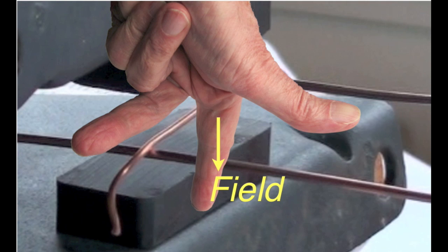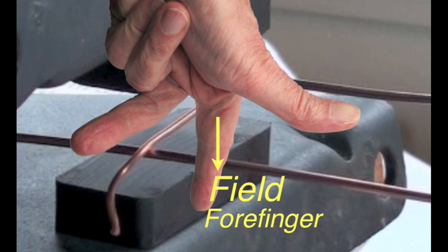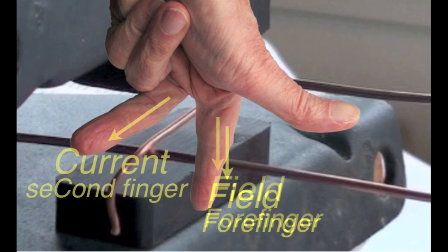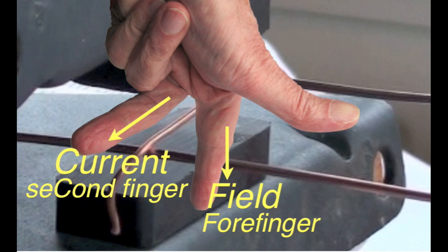If you position your hand so that the forefinger represents the magnetic field. I'm sure you'll remember that the F in forefinger represents the F in field. And then the second finger is angled so that it represents the flow of current. Less easy to remember, but there is a C in current and a C in second.